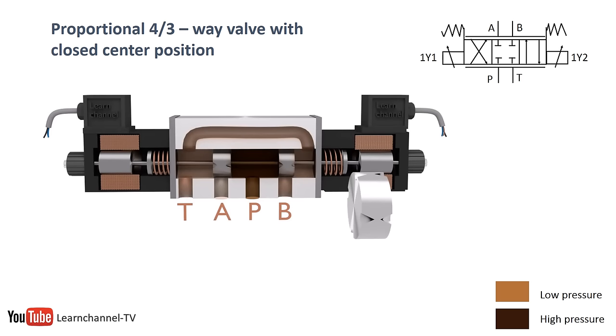To avoid flow lag due to spool overlap, most manufacturers cut V-notches into the spool that allows some flow to pass as soon as the spool moves.